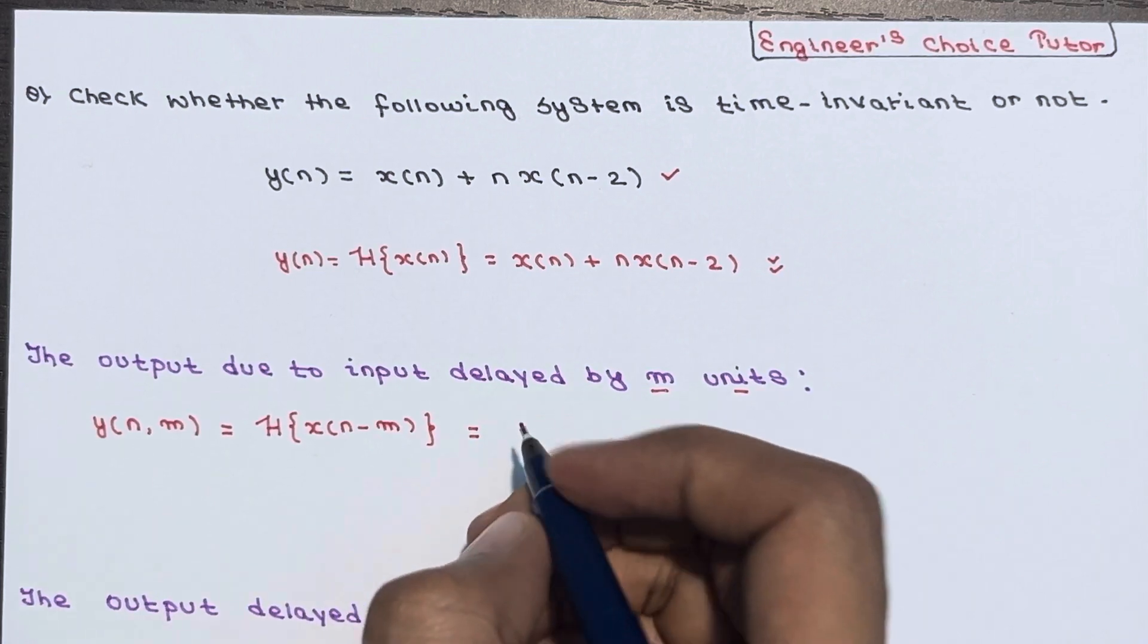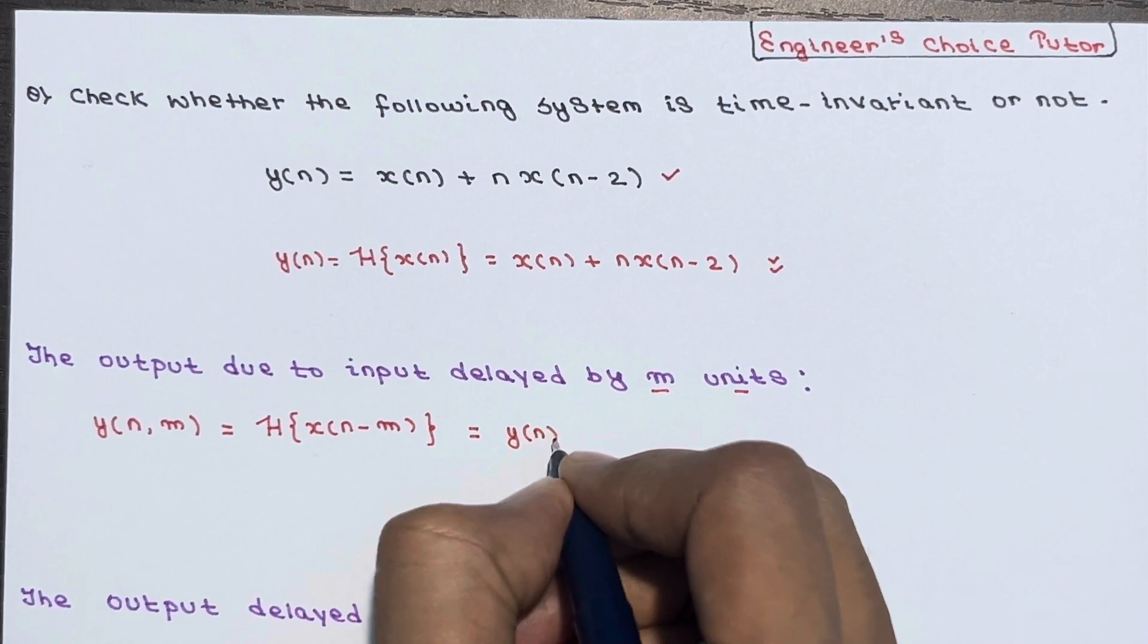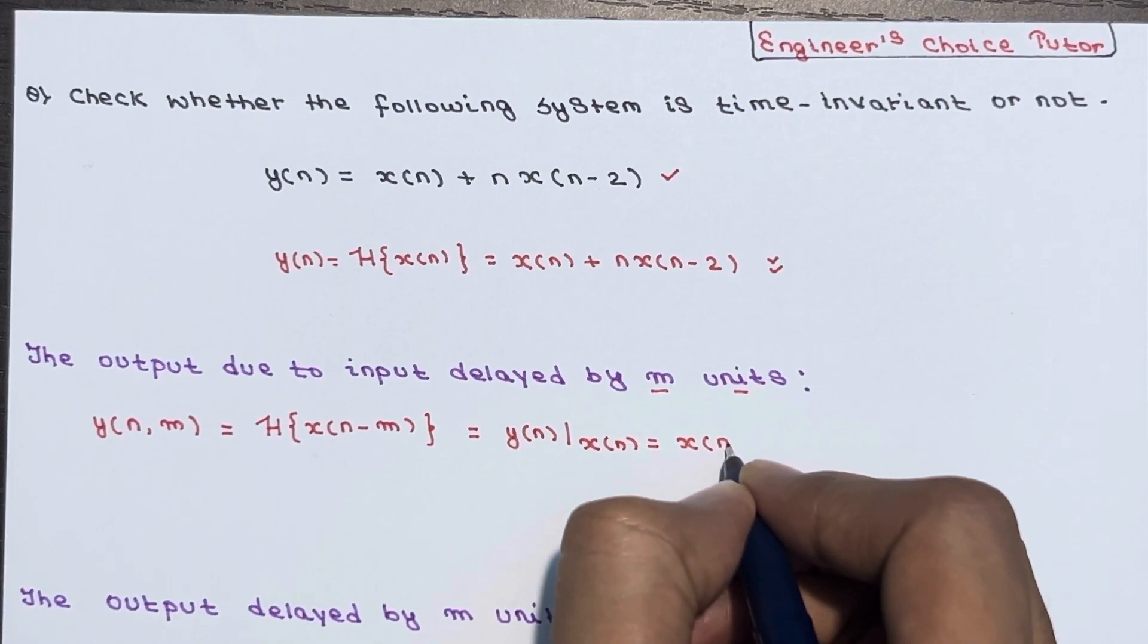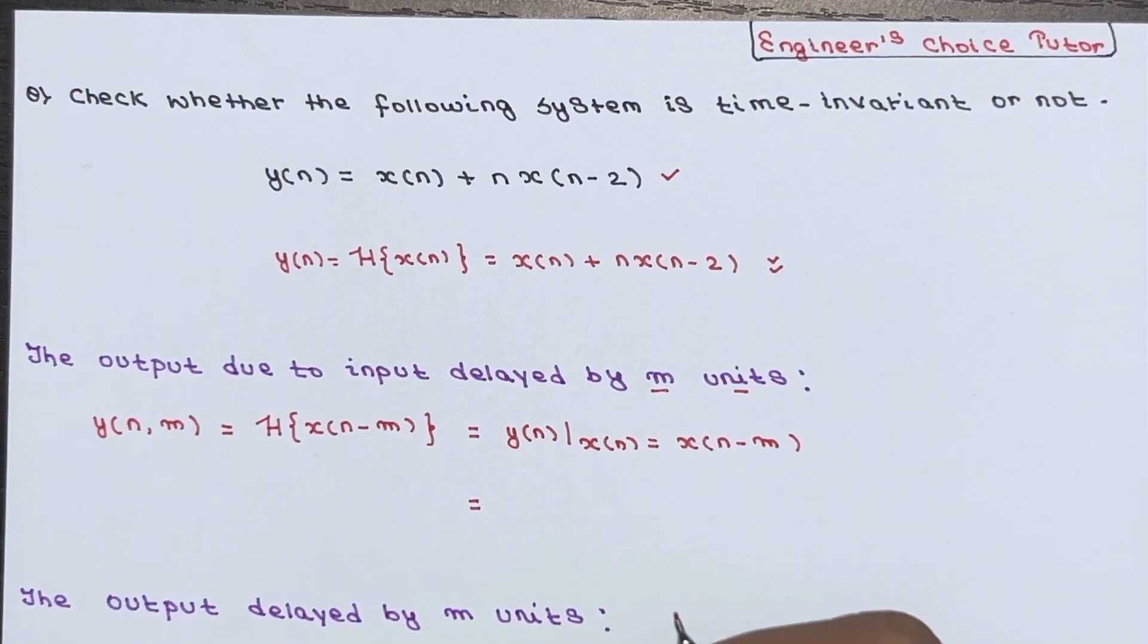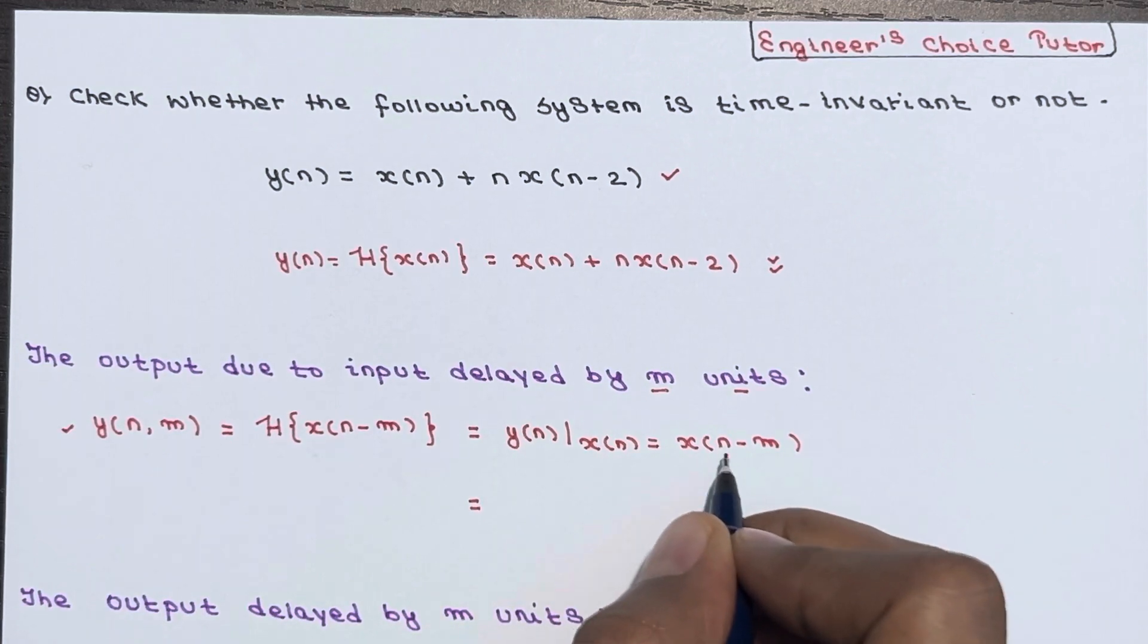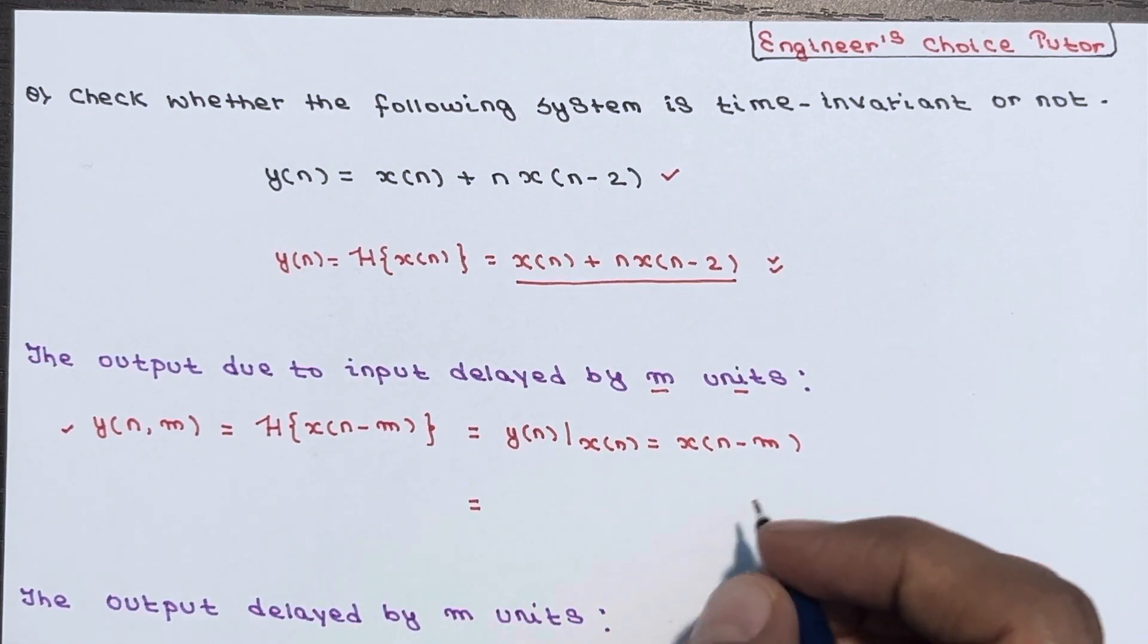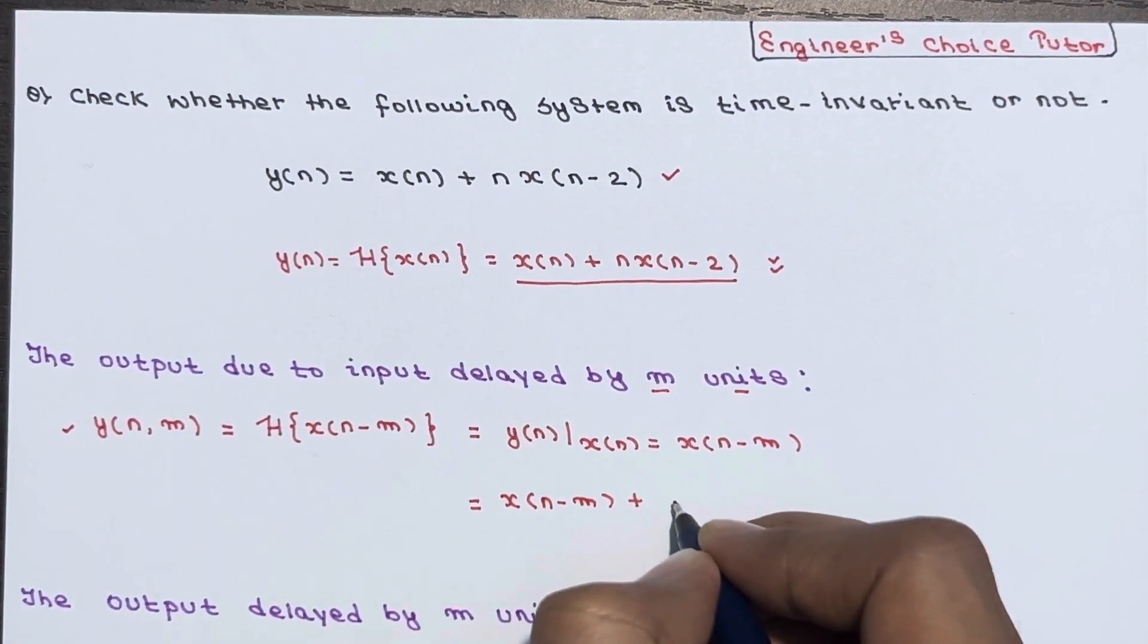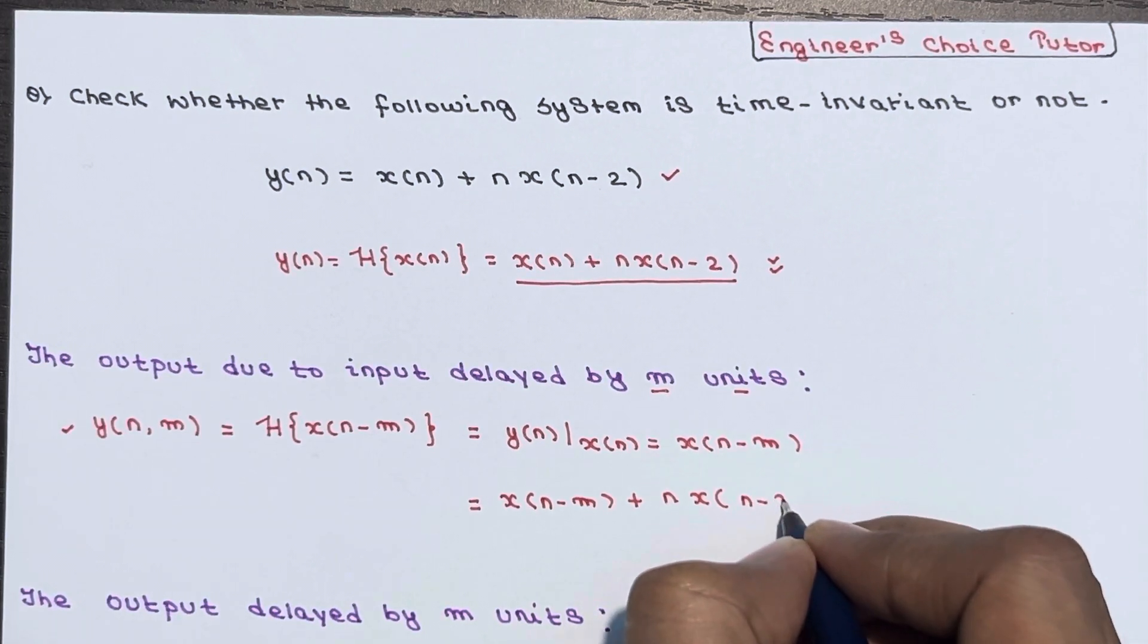So this will become nothing but y(n) when x(n) is equal to x(n-m). So just place the values here. This will become x(n-m) + n*x(n-2-m).